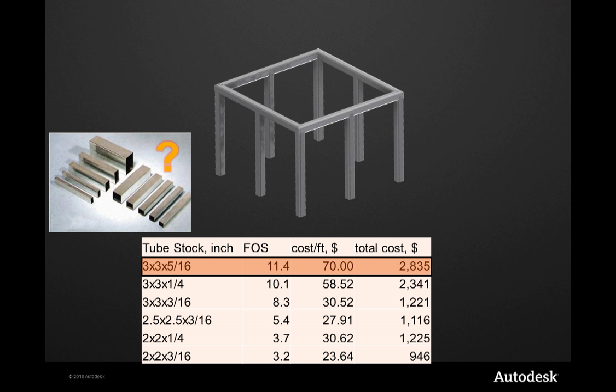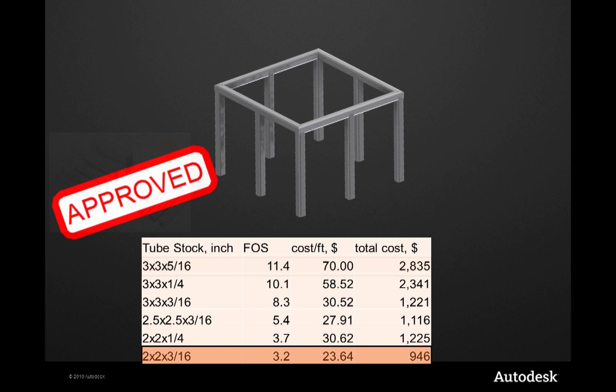You can see here that I was able to reduce my stock to 2x2 inch by 3/16 wall thickness, maintain a factor of safety greater than 3, and the final design costs one-third as much as the original material choice. I'm able to take cost out of the product without adding a lot of time to my development process.